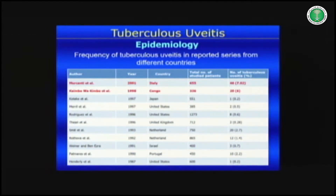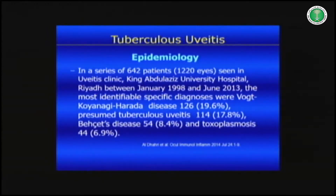Variations are also related to the level of awareness about the diagnosis of TB. I always say we have to keep the diagnosis of TB in the back of our mind and rule it out in patients, especially those with chronic uveitis and those not responding or showing recurrence on immunosuppressive therapy. In a series of 642 patients at King Abdulaziz University Hospital reviewed by Dr. Dahri Hoda, the most common diagnosis was Vogt-Koyanagi-Harada disease, followed by tuberculosis.